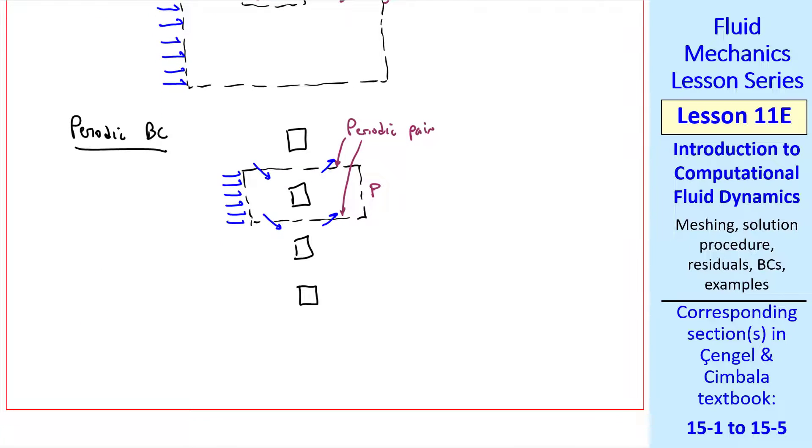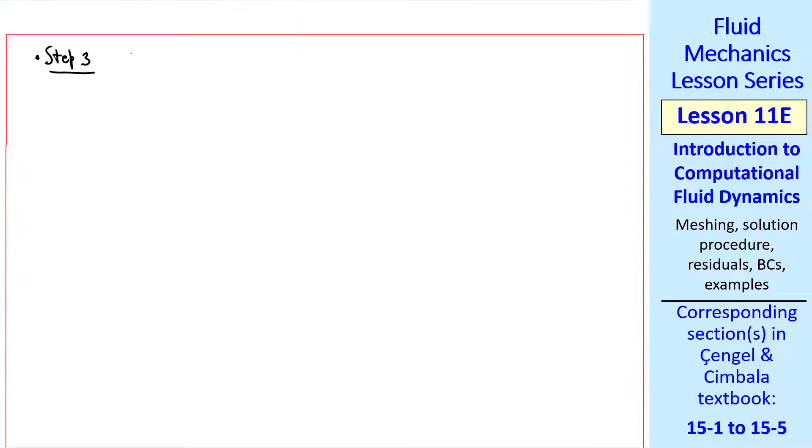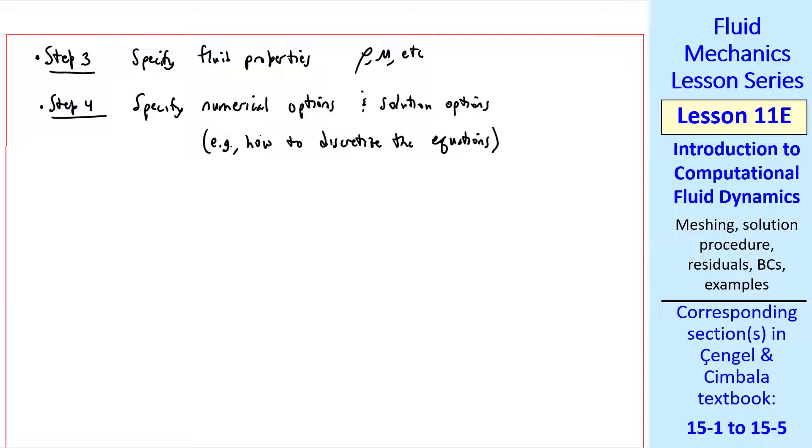There are other specialized boundary conditions that I won't talk about here. Step 3 is to specify fluid properties: density, viscosity, etc. Step 4 is to specify numerical options and solution options. For example, how to discretize the equations. When we're solving a CFD problem, we solve for the flow equations in each cell separately. For each cell, we have to satisfy conservation of mass and the Navier-Stokes equations, taking this little cell as a control volume. You do that with all the cells, being careful how flow passes from one cell to another. The actual equations are discretized forms of the differential equations.